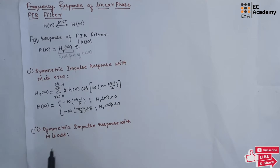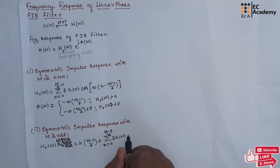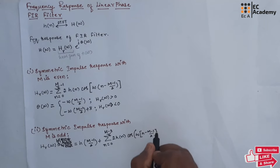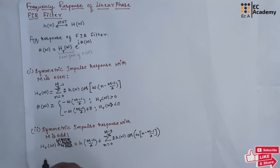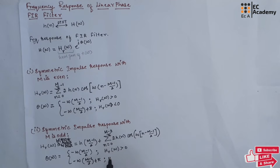For Case 2, symmetric impulse response with M odd, Hr of omega equals H of (M minus 1)/2 plus the summation from n equals 0 to (M minus 3)/2 of H of n times cos(omega times (n minus (M minus 1)/2)). The phase response theta of omega equals minus omega times (M minus 1)/2 if Hr of omega is greater than 0, and minus omega times (M minus 1)/2 plus pi if Hr of omega is less than 0.